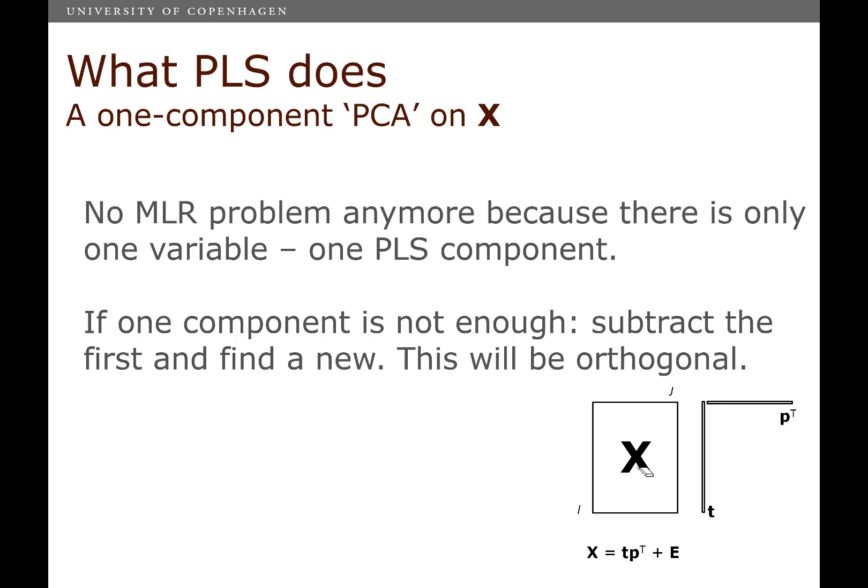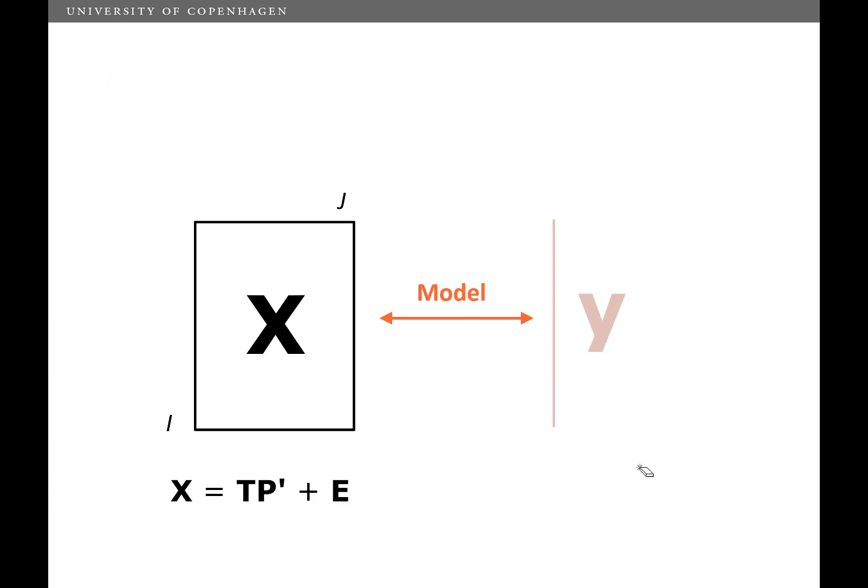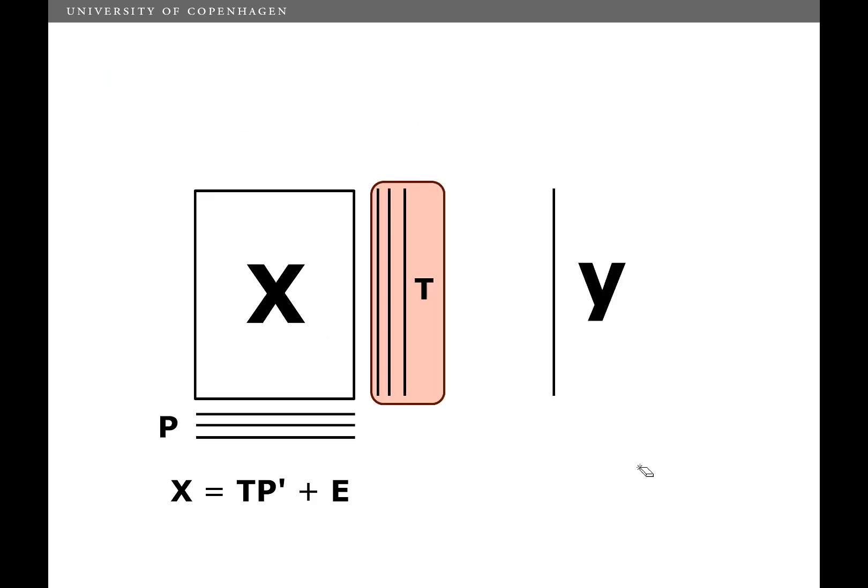and use the residuals to do exactly the same one more time. And then we can find the second component and the third and the fourth and the fifth until we have a nice description of our data. So what we do is that we find a set of components with scores and loadings. And then we have what is called the inner relation. We have score one times a number, that's a regression coefficient. Score two times another number, etc. And that's the regression model that we're building predicting Y from the scores through the inner relation.